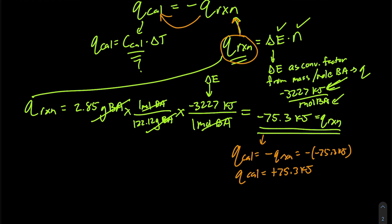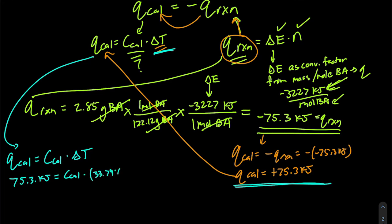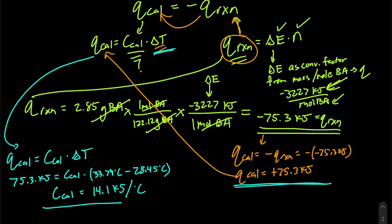Now that we've identified Q_calorimeter and we know the temperature change the calorimeter underwent, we can quantify the heat capacity. Q_calorimeter equals heat capacity times delta T: 75.3 kilojoules equals heat capacity times the temperature change from 28.45 to 33.79 degrees Celsius. Solving for heat capacity, we get 14.1 kilojoules per degree Celsius. So every degree Celsius that our calorimeter increases, it absorbs 14.1 kilojoules.